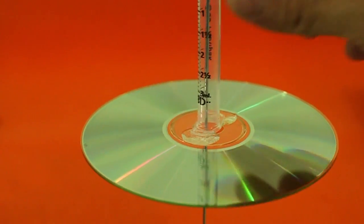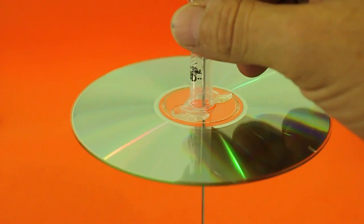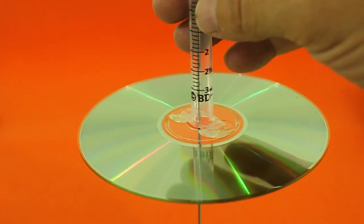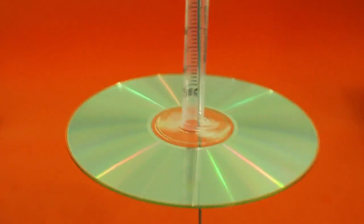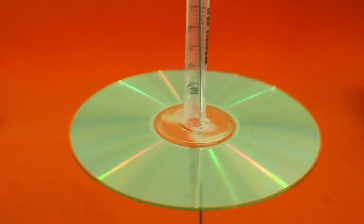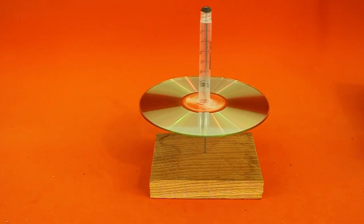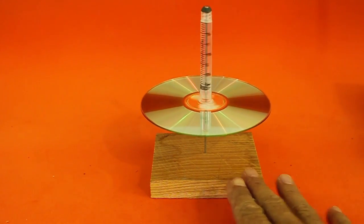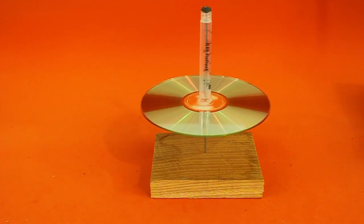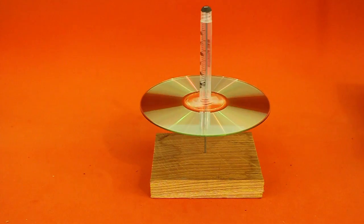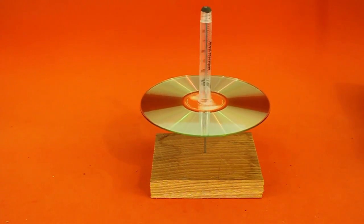Now you can insert an axis and the CD-ROM plus the syringe can spin freely. Here you can see the axis that I fixed to a wooden base and the disc spinning. It is important that the axis is perfectly vertical so that the disc spins without wobbling.